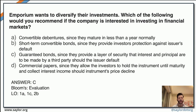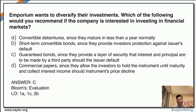Moving forward, we're thinking about Emporium, an investment company trying to diversify their investments. The question asks what recommendations we can give to Emporium if they're interested in investing in financial markets. This tests knowledge from unit one. You are expected to look at what convertible debentures are, what guaranteed bonds are, what short-term convertible bonds are, and what commercial papers are.